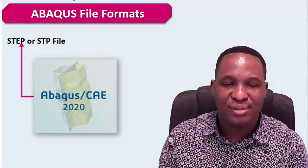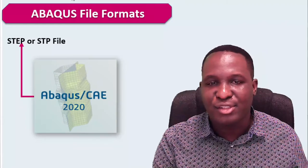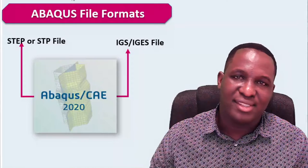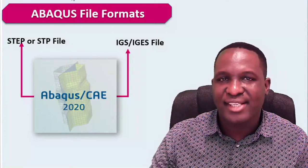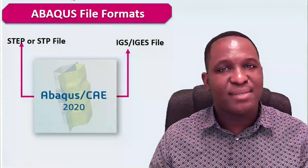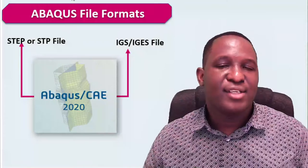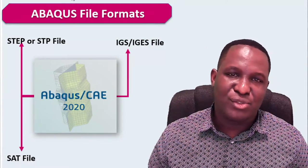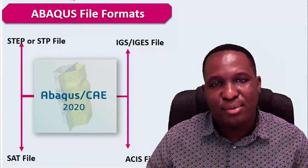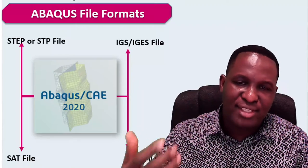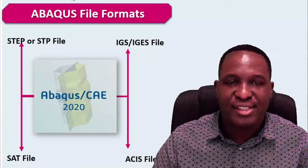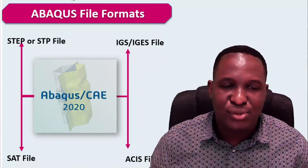The other common format is the IGS or IGES format. It's a very good format, however it has limitations, and some of those limitations have been corrected using the STEP format. There are also SAT formats, but the top two I'd recommend are STEP and IGES. If you're creating your model within a CAD geometry tool, you can save it in any of these formats to bring it into whichever code you want to use, whether it's Abacus or ANSYS.